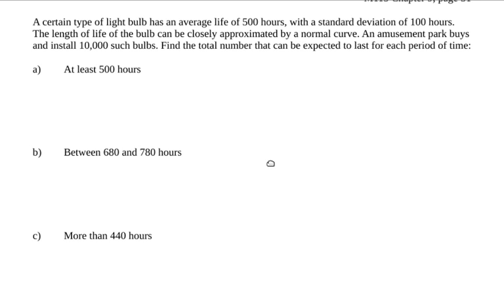A certain type of light bulb has an average life of 500 hours with a standard deviation of 100 hours. The length of life of the bulb can be closely approximated by a normal curve. An amusement park buys and installs 10,000 of these bulbs. Find the total number of bulbs that can be expected to last during a given period of time.